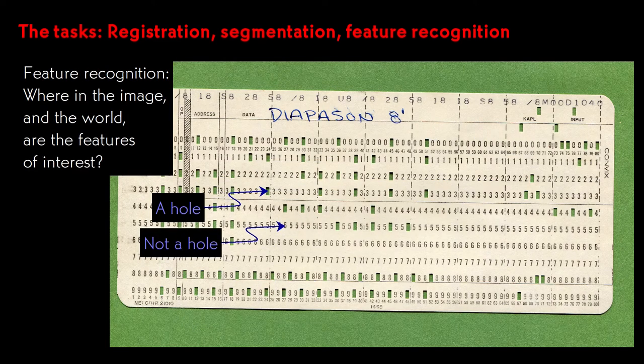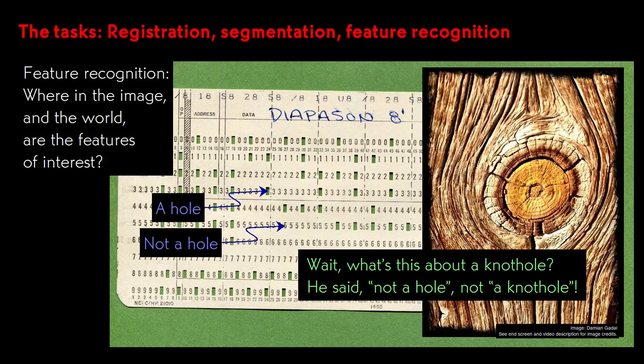Feature recognition refers to recognizing objects of interest in an image, segmented or otherwise. Here the features, of course, are the holes and the not holes, because zero bits are just as important as one.